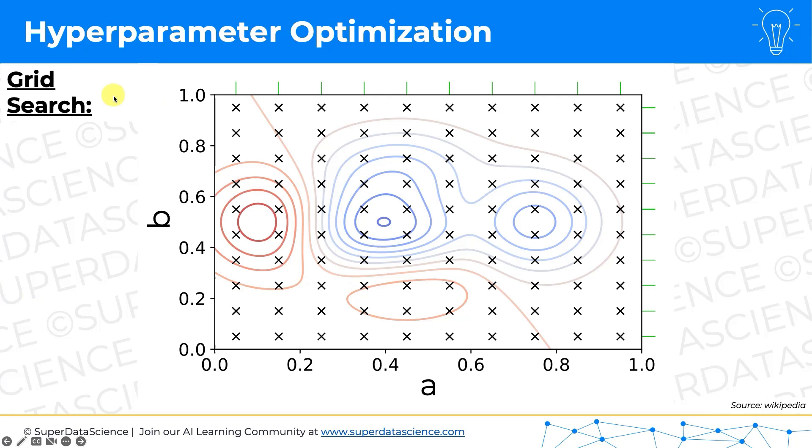And so what grid search does is you see these little x's? That's basically what we did. We take hyperparameter A, and we specify a grid. We say, okay, so hyperparameter A, we know it's between zero and one. We're going to start from, let's say, here in this case, it's about 0.05 with a step of 0.1. So 0.05, 0.15, 0.25, 0.35, 0.45, 0.55, etc., up to 0.95.